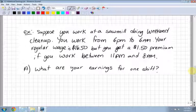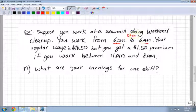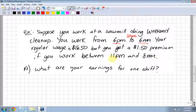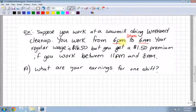Last example: Suppose you work at a sawmill doing weekend cleanup. You work from 6 p.m. to 6 a.m.—that's 12 hours. Your regular wage is $16.50, but you get paid a premium if you work between 11 p.m. and 8 a.m. because it's in the night, right? It's very late at night. It's like my wife, when she goes to work at 7:30 and works until 7:30 the next morning—somewhere around midnight, she could make a premium.